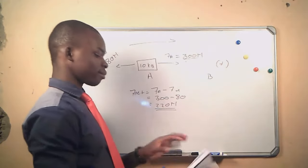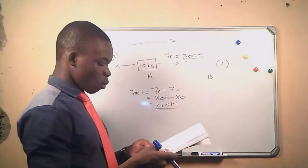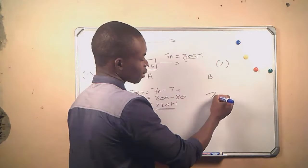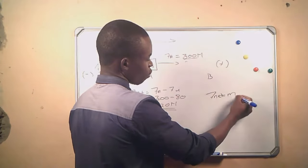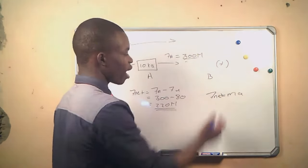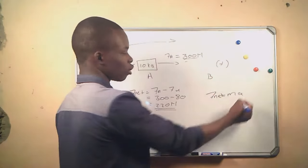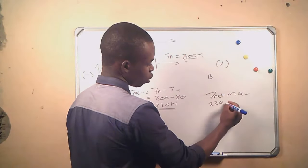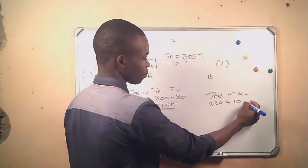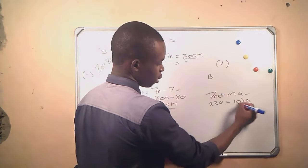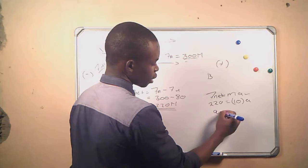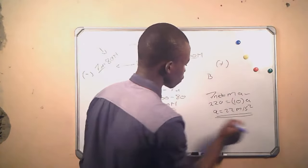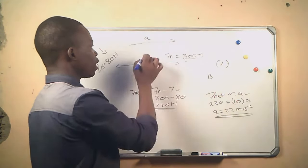Now we go to question number two: what is the acceleration? According to Newton's second law of motion, F_net equals ma — mass times acceleration. We have the net force and we have the mass, so we can get the acceleration. Substituting: 220 equals 10 times A, giving us an acceleration of 22 meters per second squared, acting in the direction of motion.